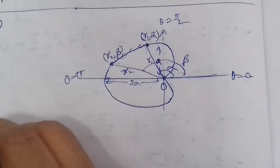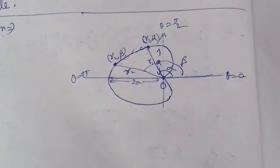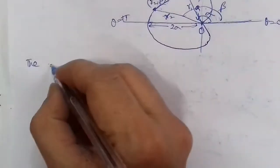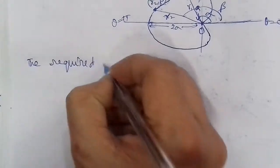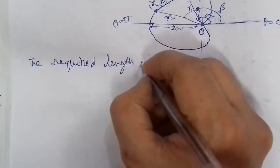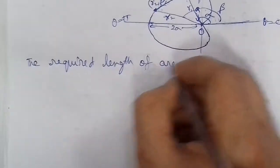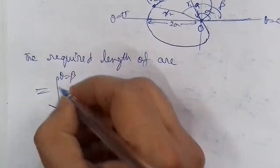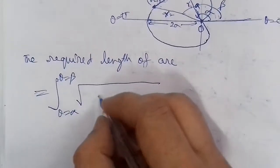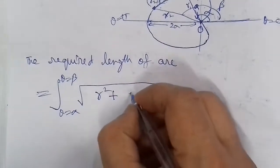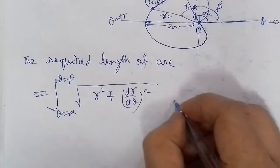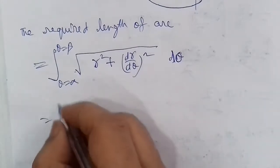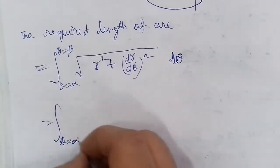Then we'll apply the formula. This is the formula we'll find. The required length of arc is equal to integral from α to β of square root of [r² + (dr/dθ)²] dθ. The limit here we have to tell: θ = α to β.